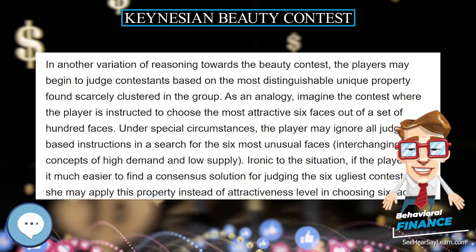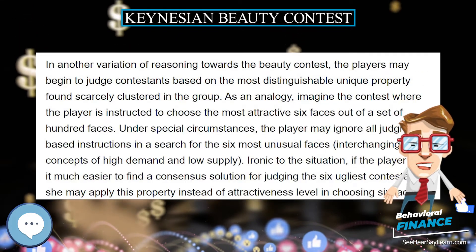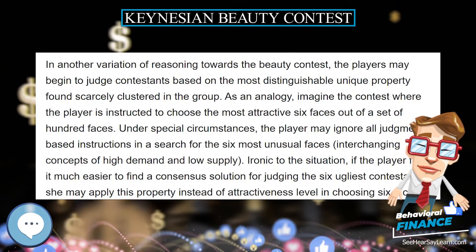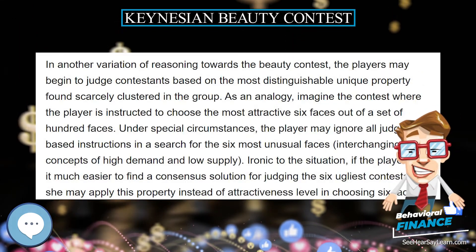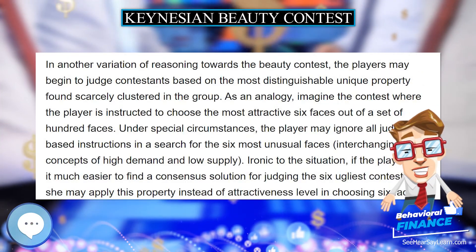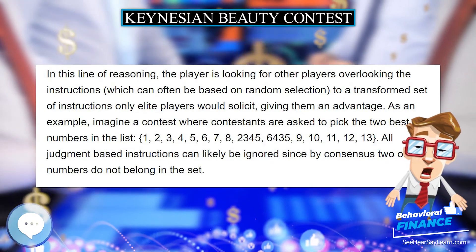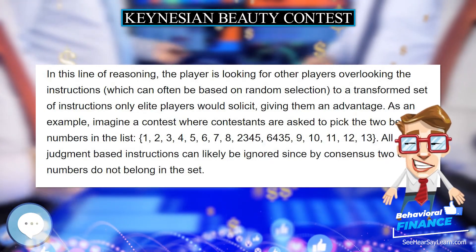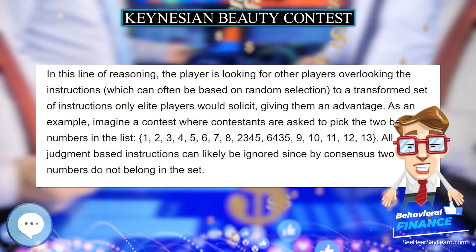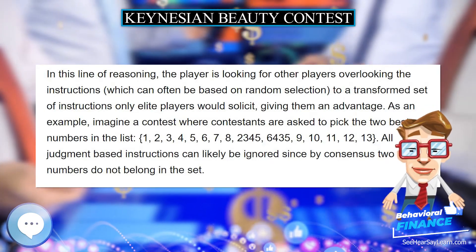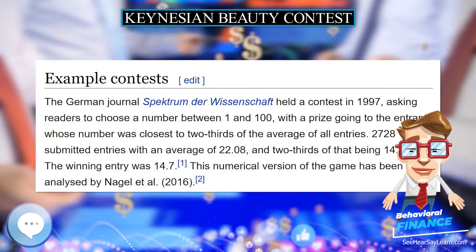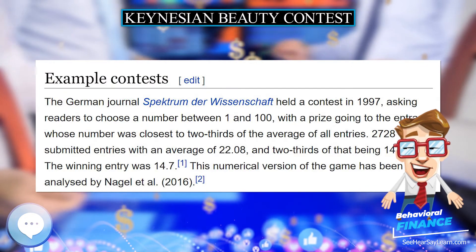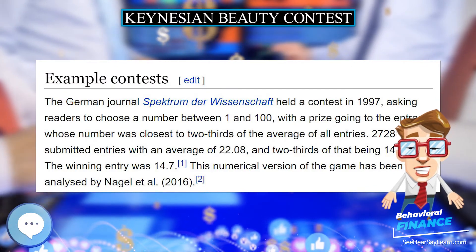Empirically, in a single play of the game, the typical finding is that most participants can be classified from their choice of numbers as members of the lowest level types 0, 1, 2, or 3, in line with Keynes' observation.